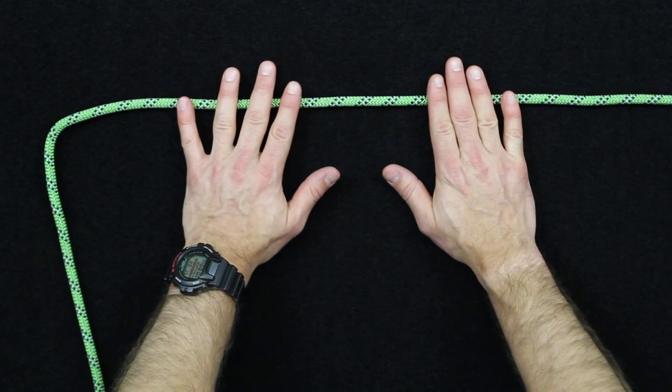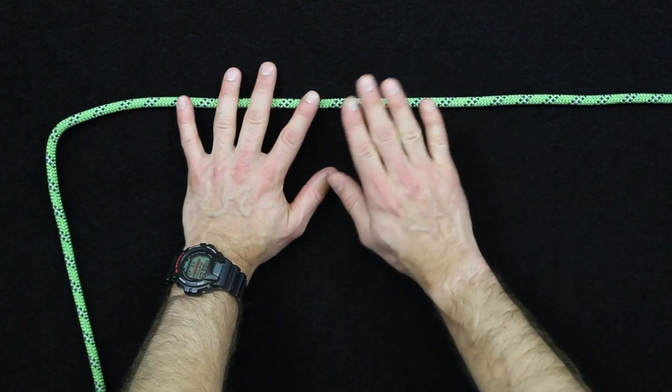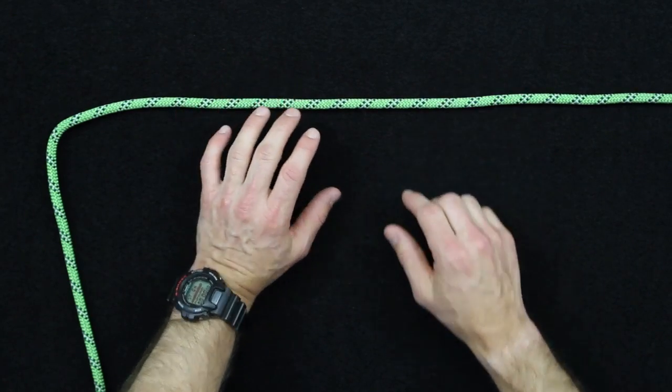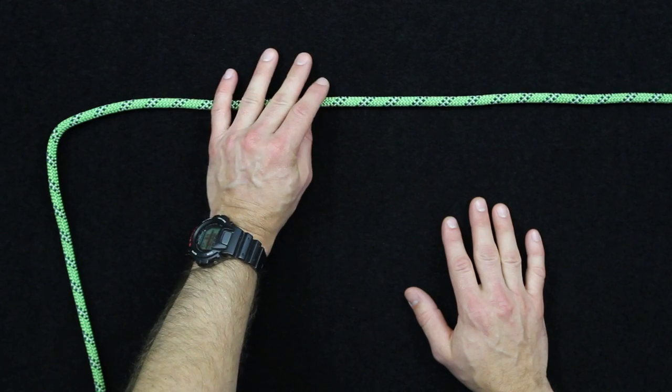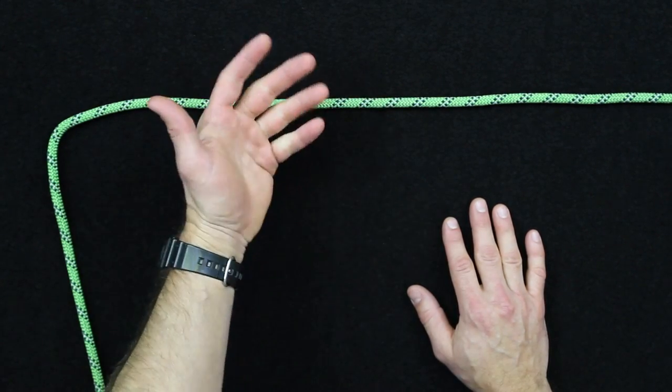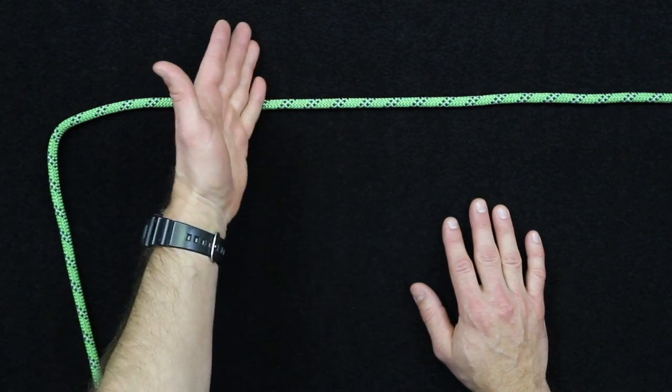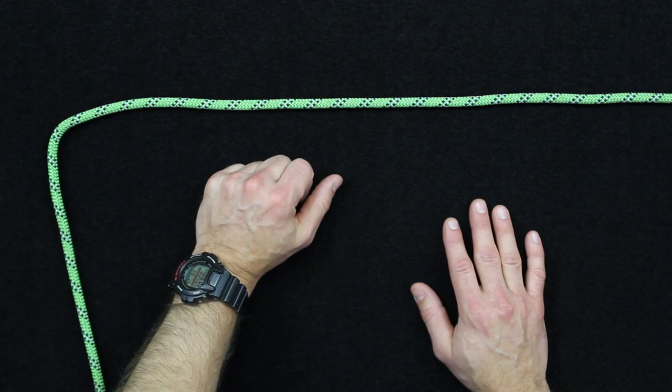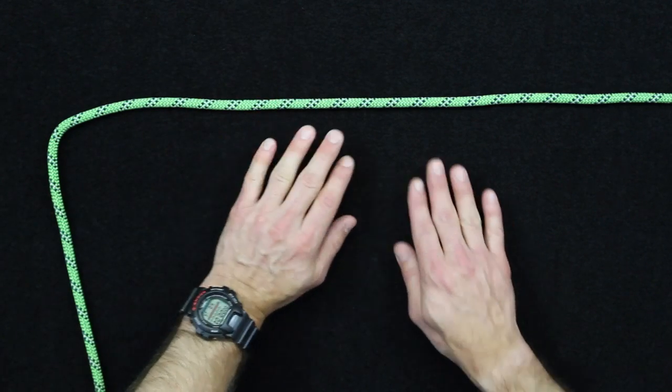Alright guys, so the first step in tying the heaving line knot is to talk about some of the applications for it. This is a great alternative to the monkey's fist, which is a great knot for heaving over a tree branch to pull a bear bag out of the way, or to throw a line across a stream if you're trying to facilitate somebody crossing like a shallow water crossing.